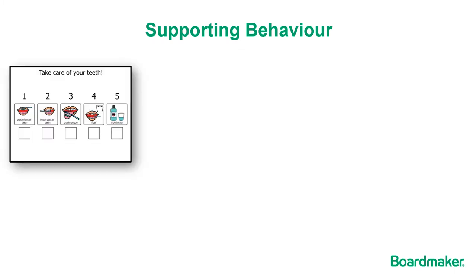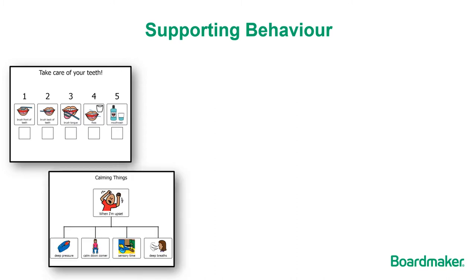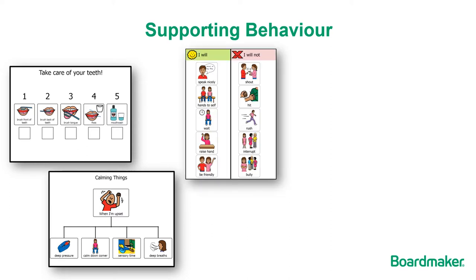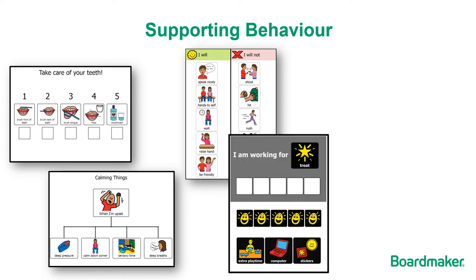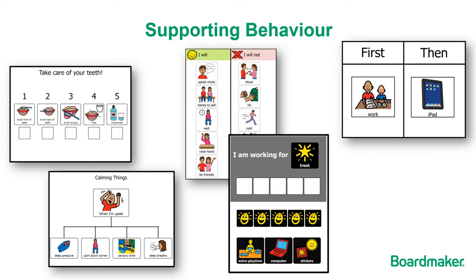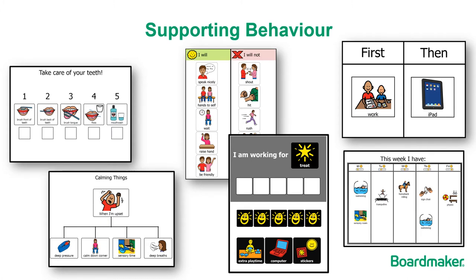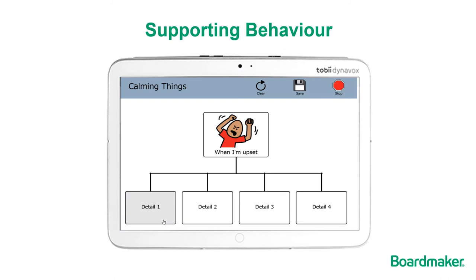With a wide range of PCS you can support behaviours such as following directions with a concrete task like brushing teeth, or talking about more complex strategies like self-calming techniques. We can make expectations clear with guidelines for behaviour and show progress towards rewards. Support understanding of what's going to happen in the next few minutes, or make a plan for the entire week. And with Boardmaker 7 you can create interactive materials too, allowing you to put symbol-supported resources on a device or tablet for support on the move.